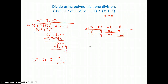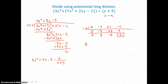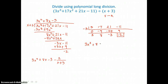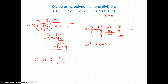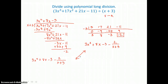I can write my quotient again. The coefficients are on the bottom line, 1 degree less than the dividend. It's 3x squared plus 8x minus 3 minus a remainder of 2 over the divisor x plus 3. So whether we use long division or synthetic division, we get the same result.